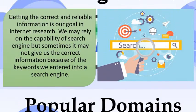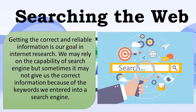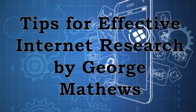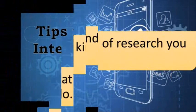Country code top-level domains include .ph for the Philippines, .eu for the European Union, .uk for the United Kingdom, and .au for Australia. Getting correct and reliable information is our goal in internet research. We may rely on search engines, but sometimes they may not give us the correct information because of the keywords we enter. There are techniques in searching information that can be applied in search engines to get better results. Some search engines allow the combination of words and logic connectors: AND, OR, and NOT.